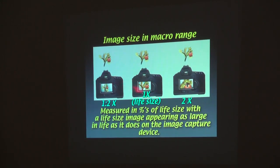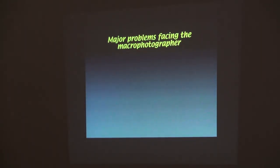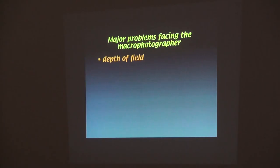Now you have to be aware that each one of these different magnifications carries something you have to do to get the image — it's not the same. What are the problems that you're going to face in macro photography? Number one: depth of field. Remember, the shorter the focal length lens, the more depth of field you get per f-stop. The longer the focal length, the less depth of field. The same rule applies: the closer you get to a subject, the less depth of field you get for each f-stop.